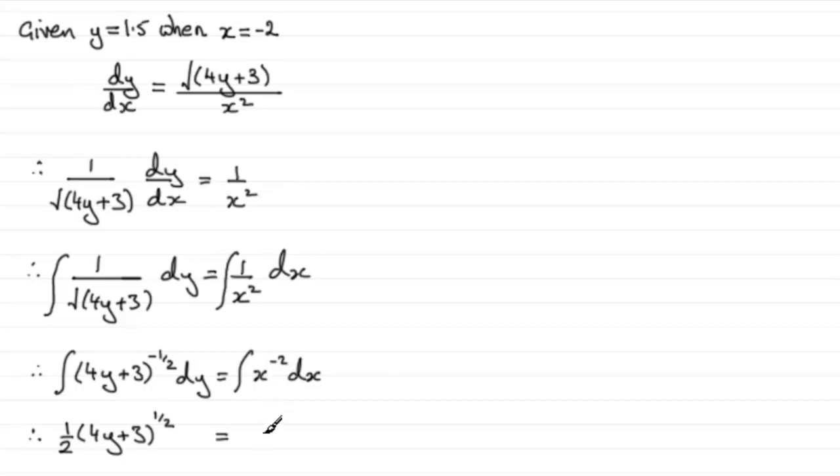We did it by recognition or substitution and it turned out to be a half of 4y plus 3 to the power a half. And if we integrate x to the minus 2, then we're going to get x to the power minus 1 divided by minus 1. Now there's always going to be a constant coming from this integral and a constant coming from this integral. When they're grouped together, one constant minus another is going to give us another constant, so I'm just going to call that plus c.